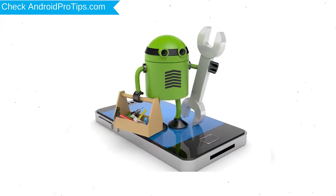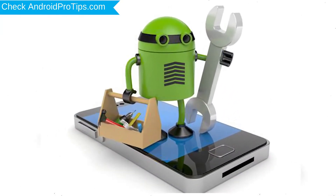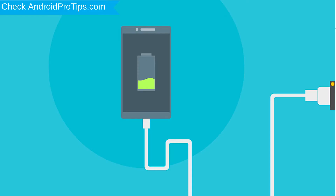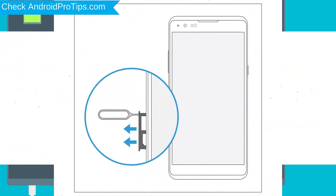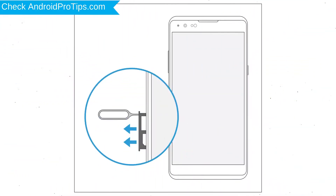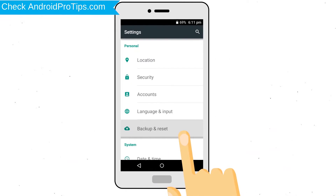Before resetting your mobile, your mobile battery must be above 50%. Remove SD cards and SIMs. Back up your Android mobile data if possible.